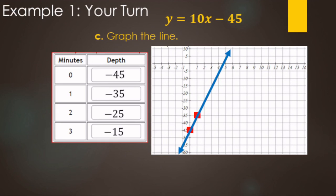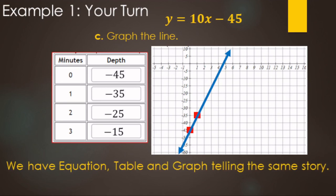Alternatively, use the story directly: start at negative 45 on the graph, and since the rate is 10 feet per minute and the Y scale goes by fives, go up 2 squares (10 feet) for each minute. So we have the story, the equation, the table, and the graph — all telling the same story.